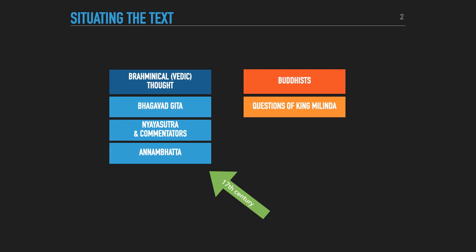And we will read another Indian philosopher named Shantideva, a Buddhist, in this course, but he lives much earlier than Anambatta in the 7th to 8th century. Okay, so just to keep track of who is whom.